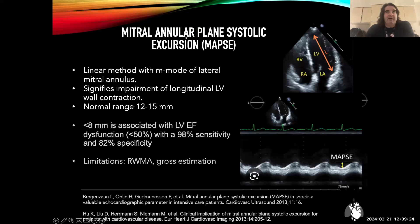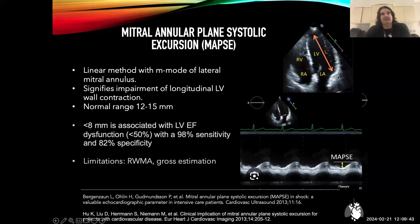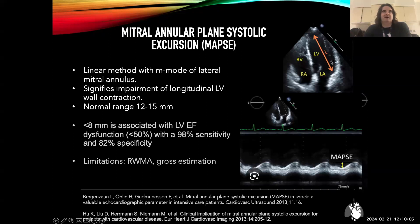Another method investigated is MAPSE — like TAPSE but for the left ventricle — which looks at how much the lateral annulus of the mitral valve shortens from the base to the apex during systole. Normally it's about 1.2 to 1.5 centimeters; less than 8 millimeters is associated with a drop in LV function. This is more of a binary indicator of whether there's a high probability of LV dysfunction. It's problematic if you have regional wall motion abnormalities and doesn't track to a categorical ejection fraction — it's really just a yes-or-no measure.